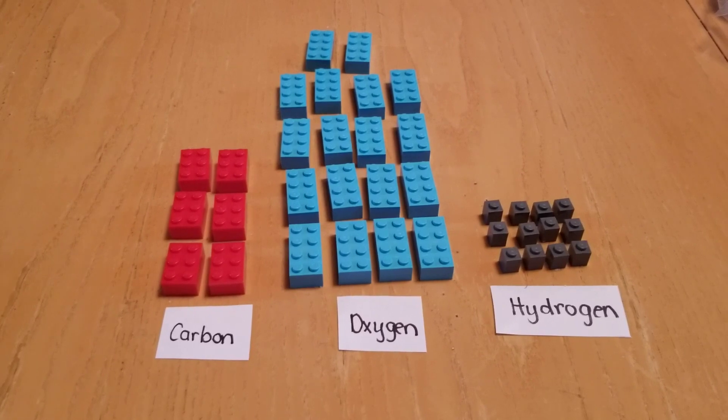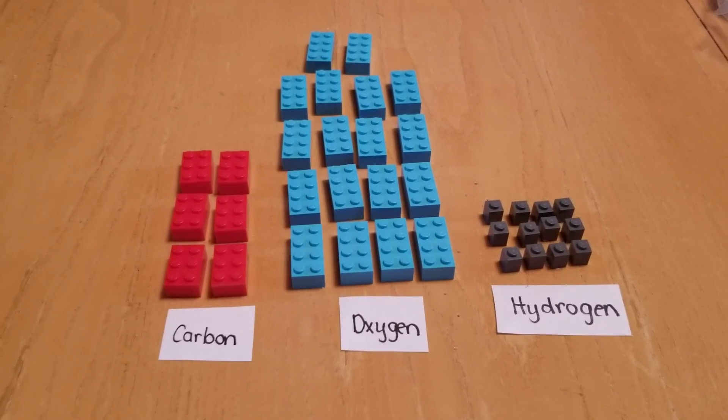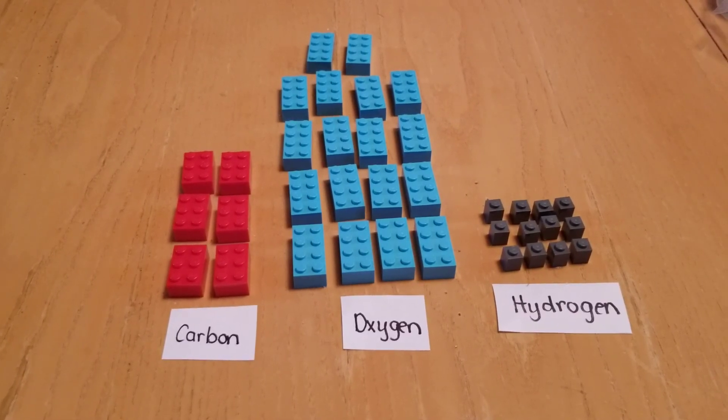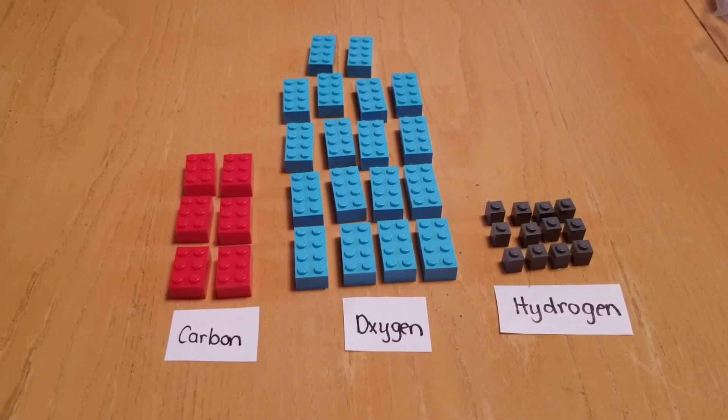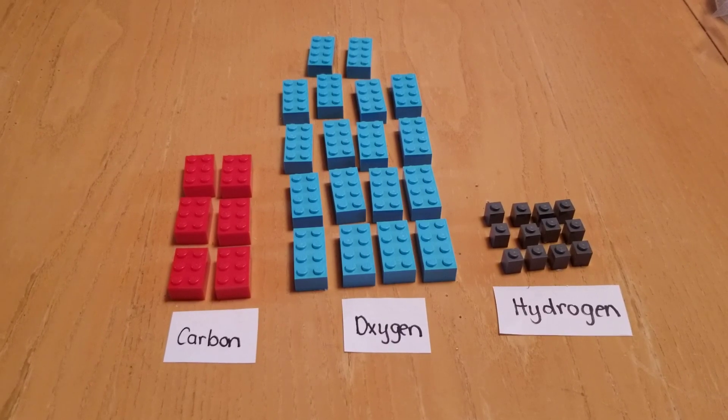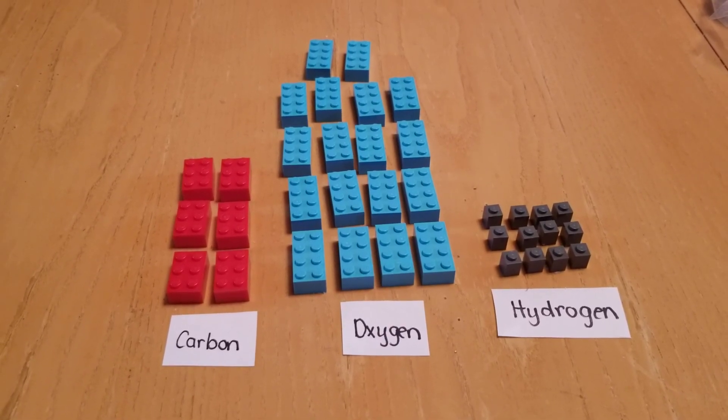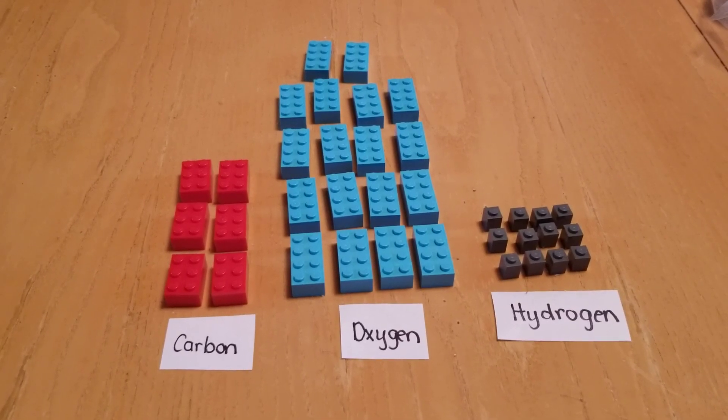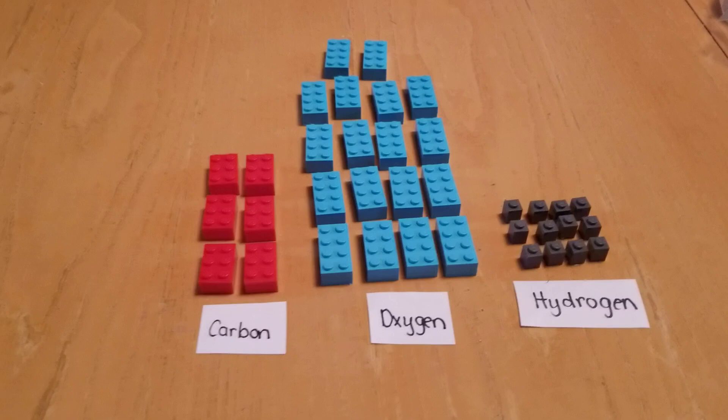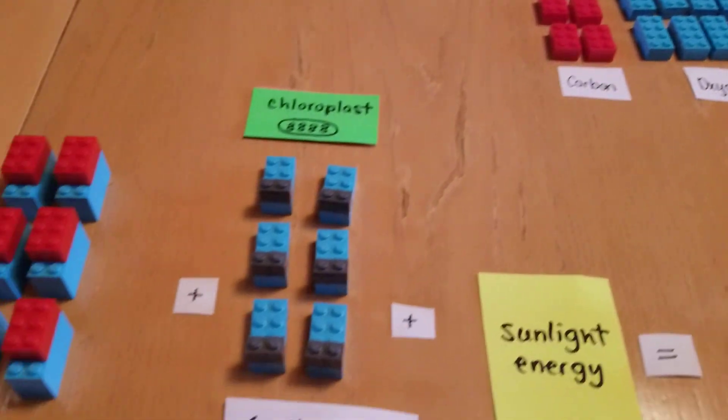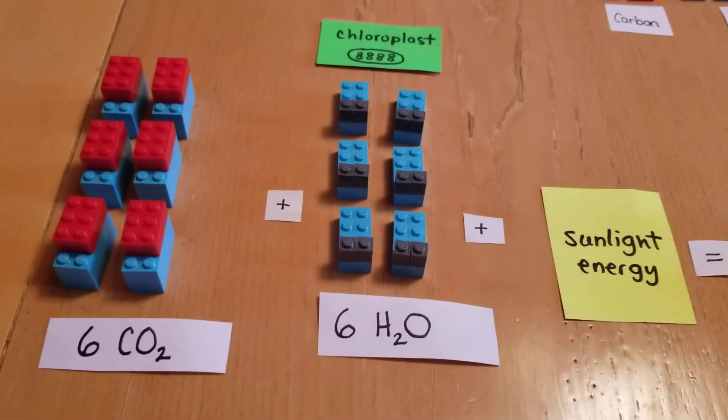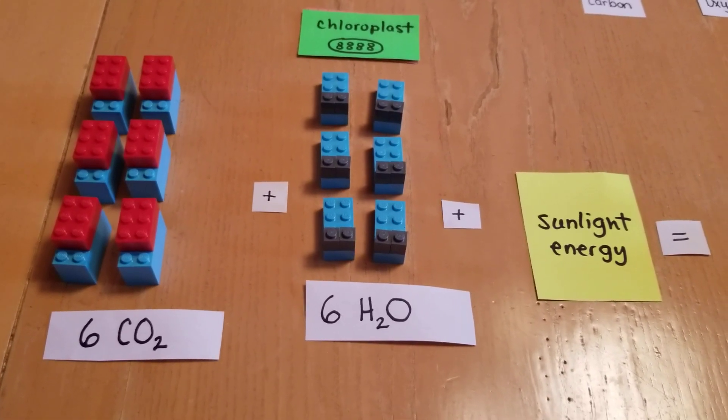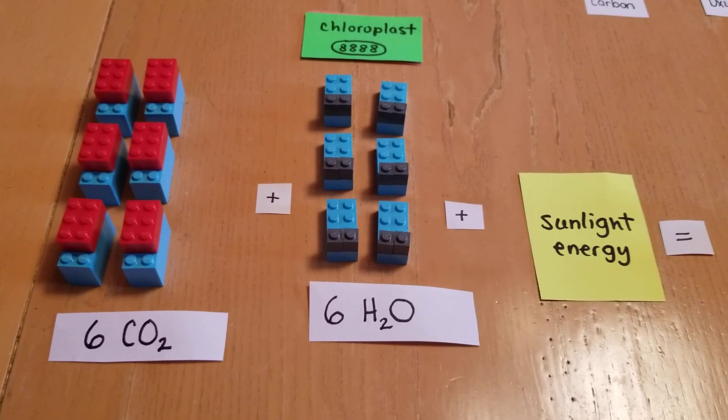So here we start off with our elements that are in these two formulas. As you can see, we have six atoms of carbon, 18 atoms of oxygen, and 12 atoms of hydrogen. When we put these together and form our reactants for photosynthesis, we have six molecules of carbon dioxide and six molecules of water.